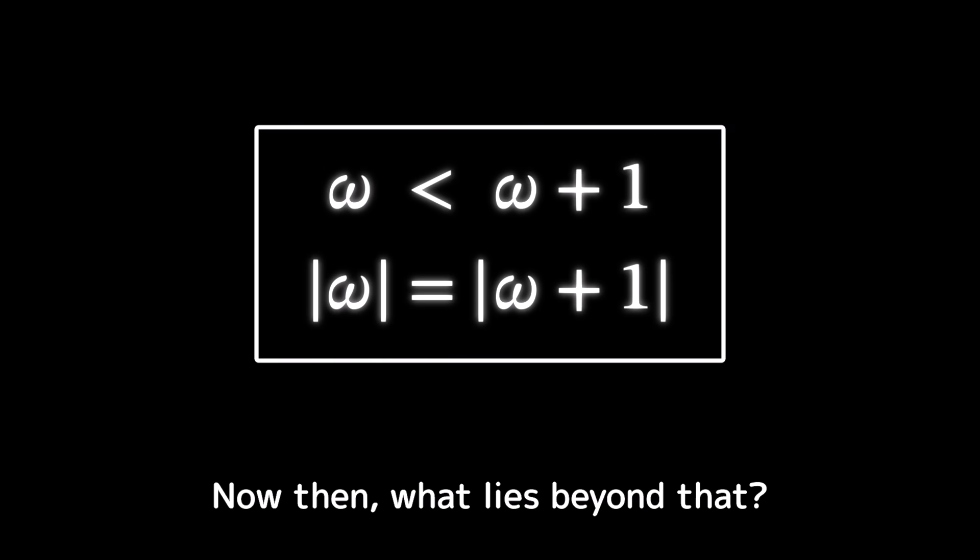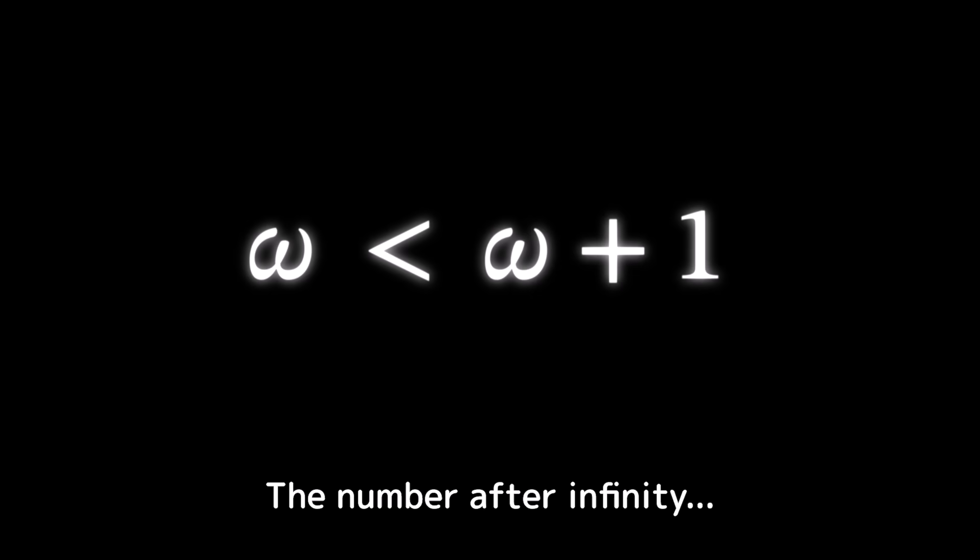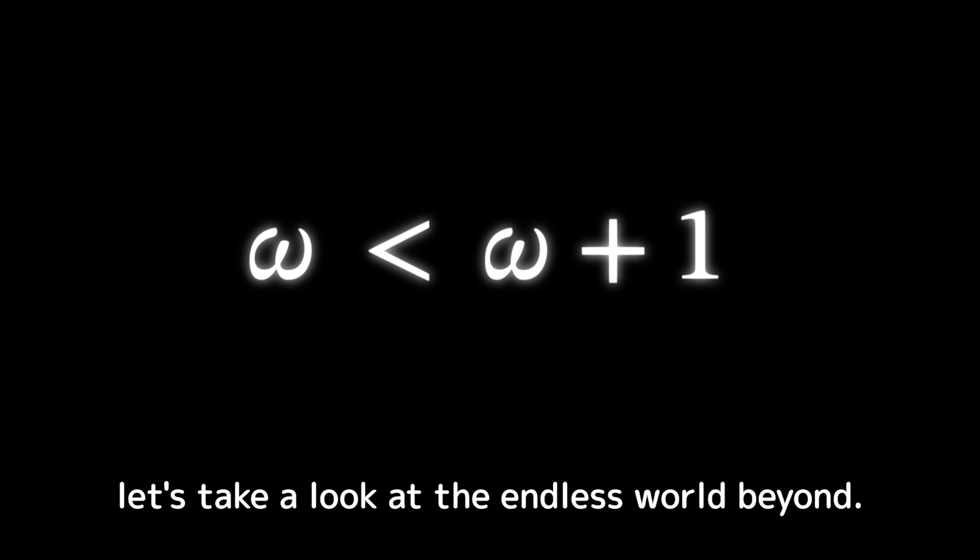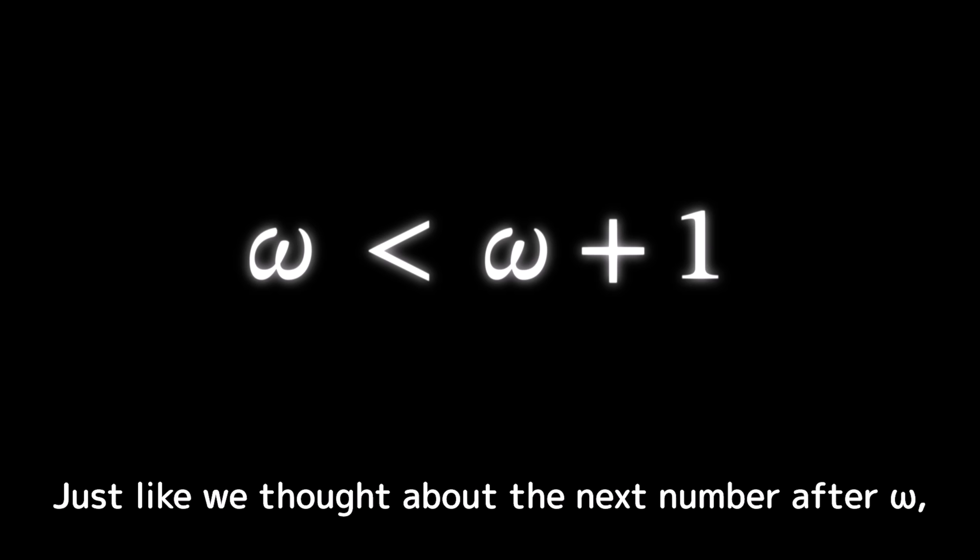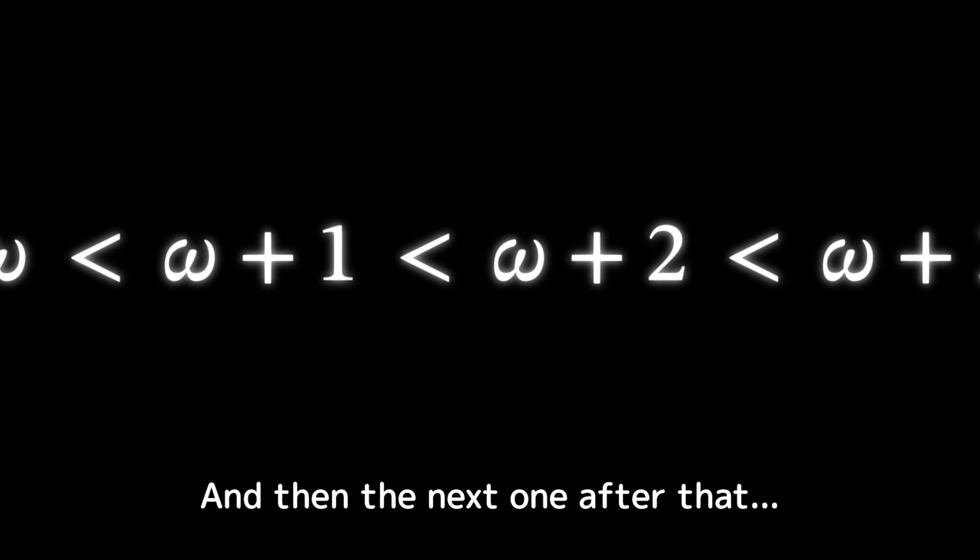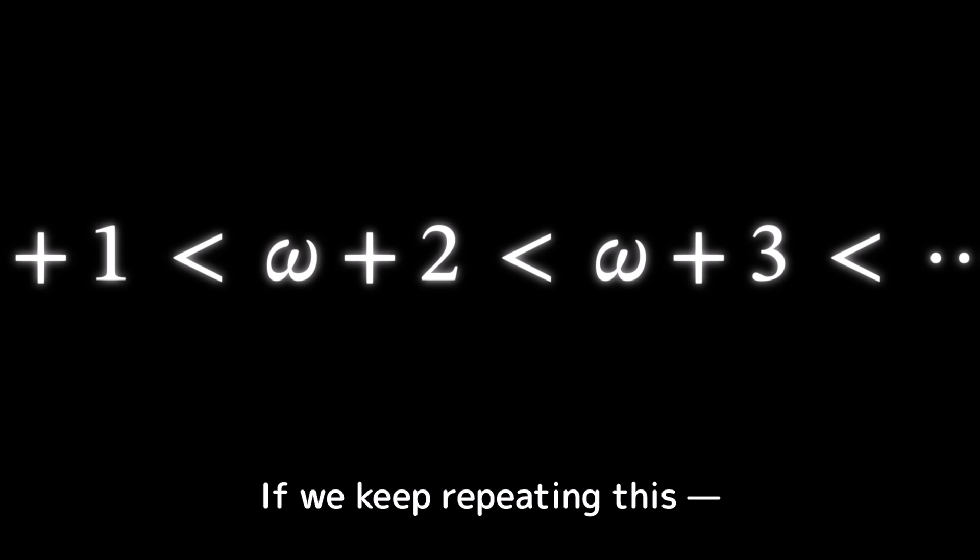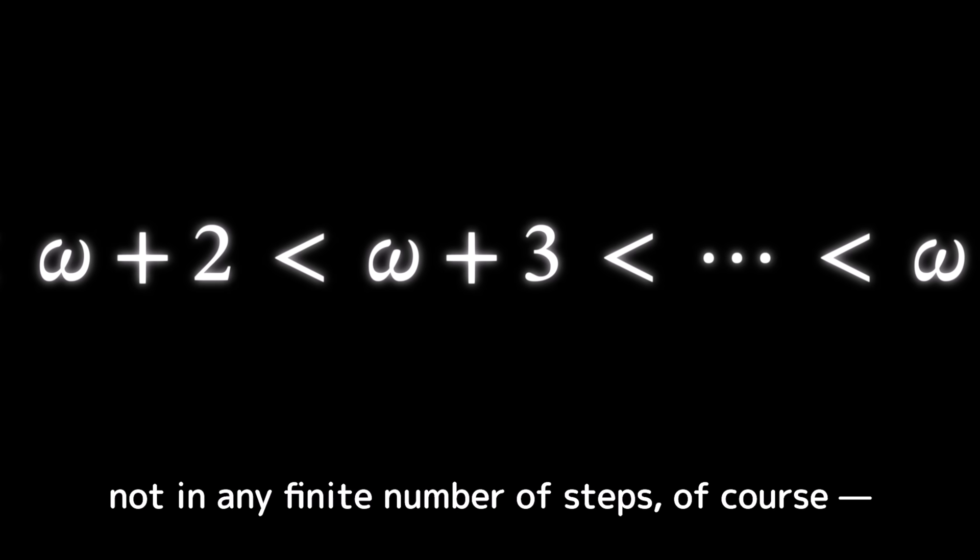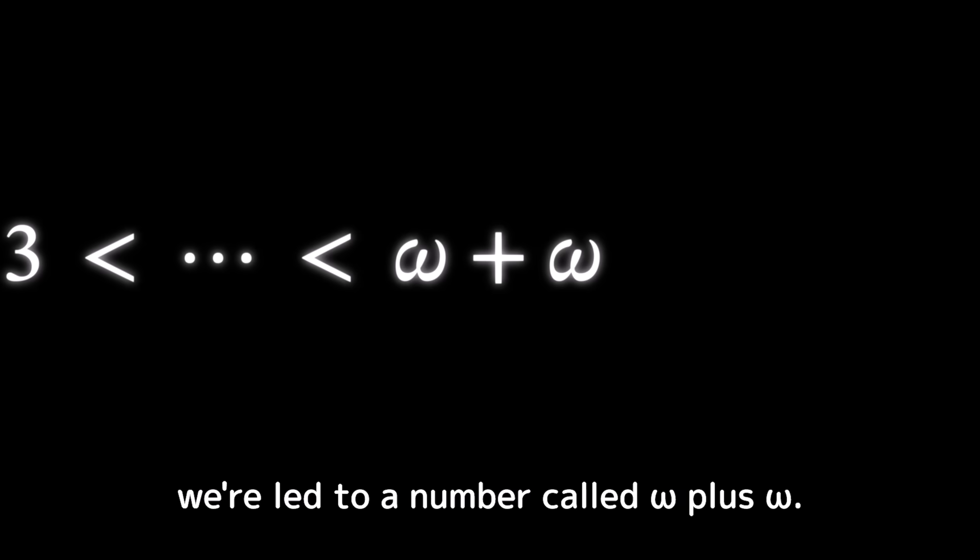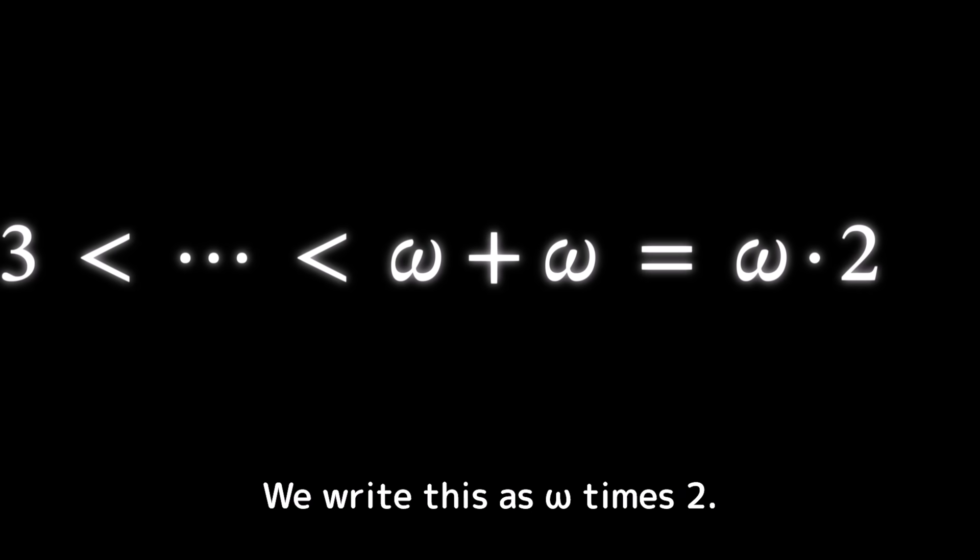Now then, what lies beyond that? The number after infinity? We could describe this more precisely using the idea of ordinal numbers in set theory. But for now, let's take a look at the endless world beyond. Just like we thought about the next number after omega, we can also think about the one after that. And then the next one after that? If we keep repeating this, not in any finite number of steps, of course, we're led to a number called omega plus omega. We write this as omega times two.